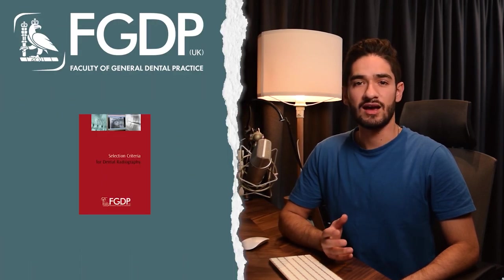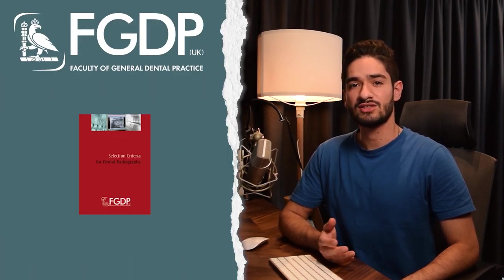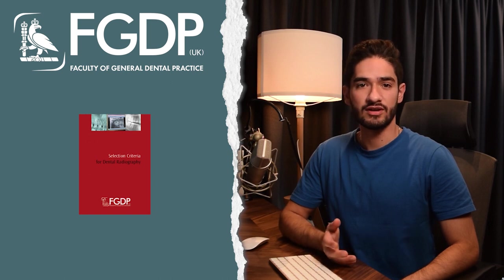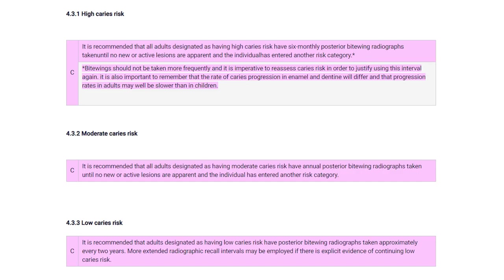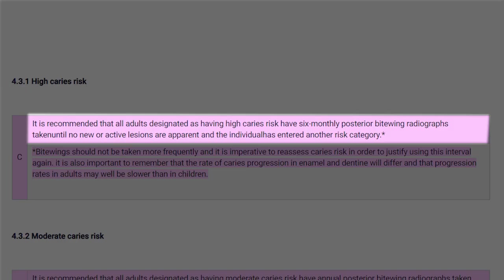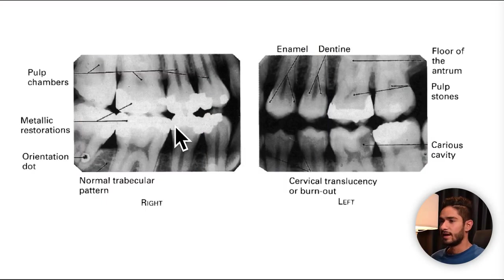The FGDP has a set of guidelines called Selection Criteria for Dental Radiography — this is what they advise, so pause the screen if you want to have a look, and I'll put a link in the description for the online version. The basic gist is: the higher the risk, the shorter the interval. Keep in mind you should keep repeating bite wings until no new or active lesions are apparent and the individual has entered another risk category.